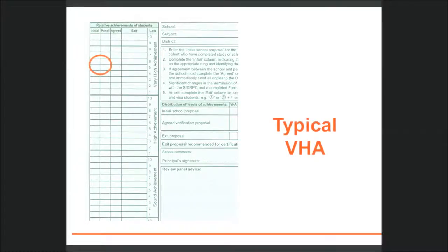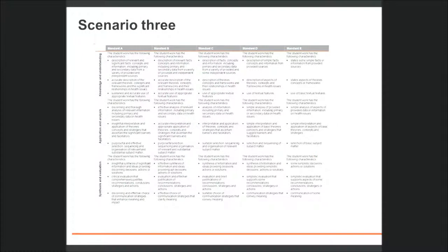So an appropriate decision might be to place the folio at the middle of, or typical, very high achievement. There may be a number of students with similar achievement. The school will make rung placements by looking at the extent to which the syllabus exit standards have been demonstrated for each dimension. In this example, placement will be determined by considering the evidence of B qualities in the folio.